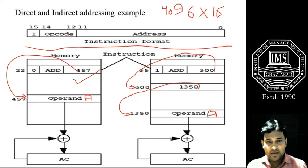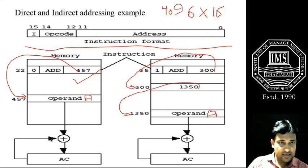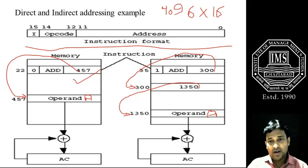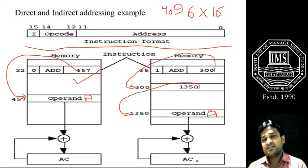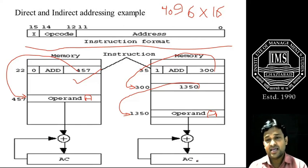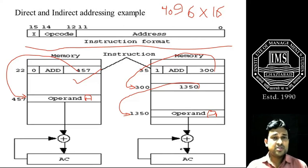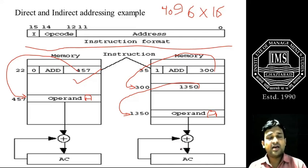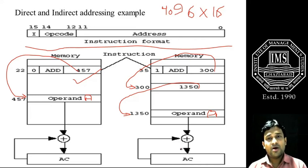In direct addressing, the operand will be added to the accumulator — represented by AC — if we have a simple architecture with only one processor register, and this process continues. This is the basic and foremost difference between direct and indirect addressing, which will help us understand the concept of computer architecture further.